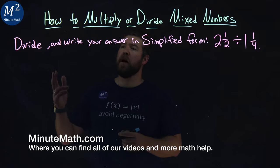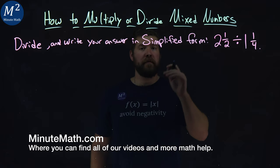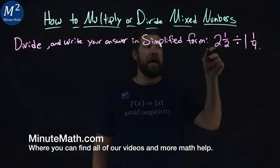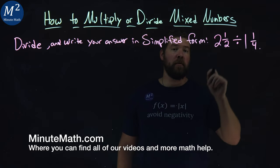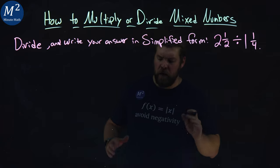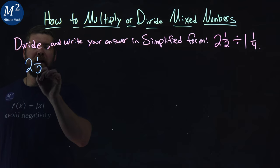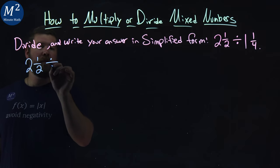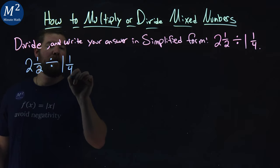We're given this problem here. Divide and write your answer in simplified form. Two and one half divided by one and one fourth. Let's rewrite our problem here. Two and one half divided by one and one fourth.